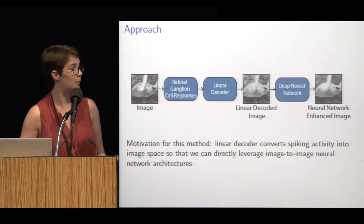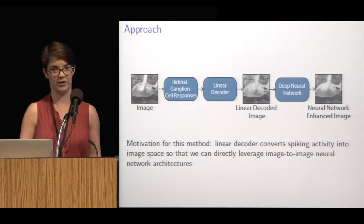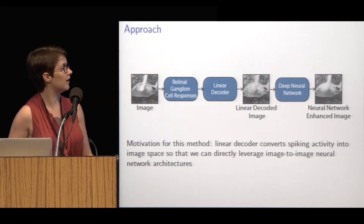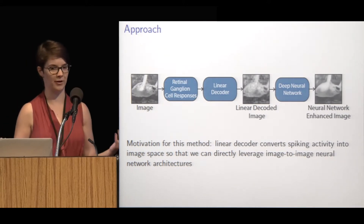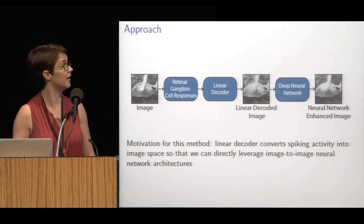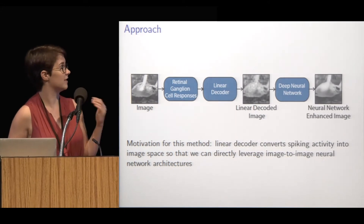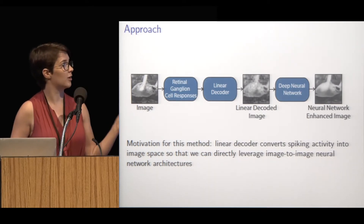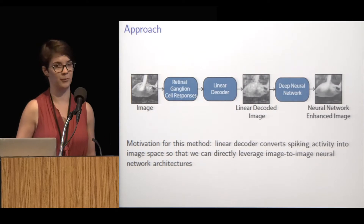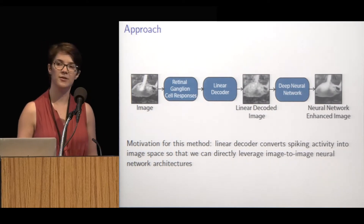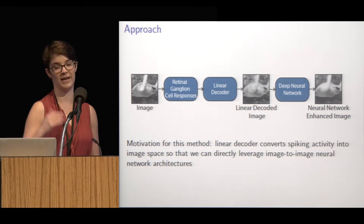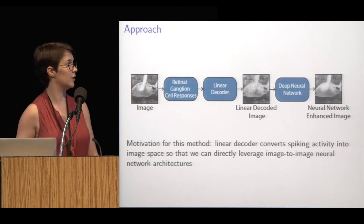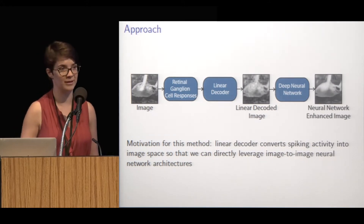Specifically, we propose to use deep neural networks on top of linear decoders. This shows the general pipeline: we work with retinal ganglion cell responses — the primary cells in the retina that send information on. Given some retinal ganglion cell responses to an image, we use a linear decoder to get a basic reconstruction, and then use a deep neural network to enhance that reconstruction to more closely resemble the original image. The reason we use this two-stage approach, instead of going straight from spikes to decoded images, is that we're entirely in image space and can use all the image-to-image neural network architectures that have been developed.